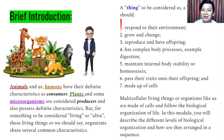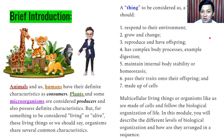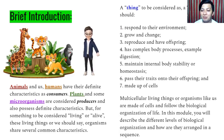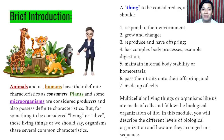For a thing to be considered a living thing, it should: number one, respond to their environment; number two, grow and change; number three, reproduce and have offspring; number four, have complex body processes — for example, digestion; number five, maintain internal body stability or homeostasis; number six, pass their traits onto their offspring; and number seven, they are made up of cells. So multicellular living things or organisms like us are made of cells — not just one, but millions, billions, and trillions of cells — and follow the biological organization of life.